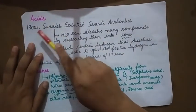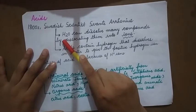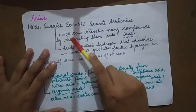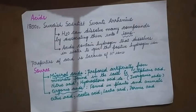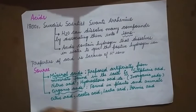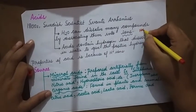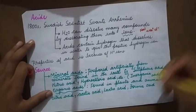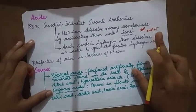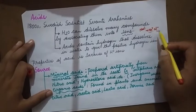Acids. In 1800, a Swedish scientist known as Svante Arrhenius put forth certain theories. Water can dissolve many compounds by dissociating them into ions. Water is able to dissolve almost all substances; that's why it is known as a universal solvent. It dissolves substances by breaking compounds into ions. For example, NaCl (common salt) breaks down into Na+ and Cl- in the presence of water.